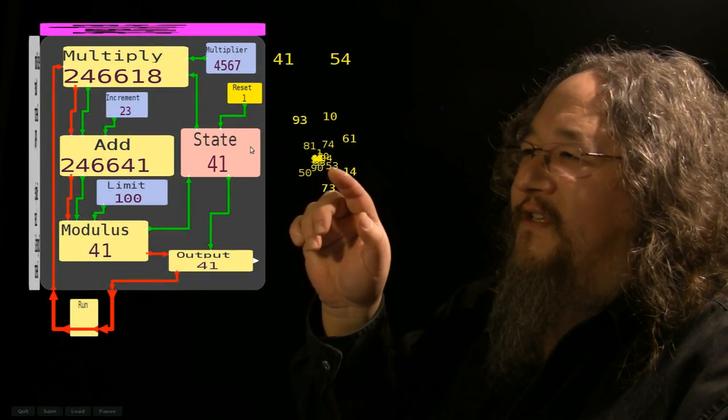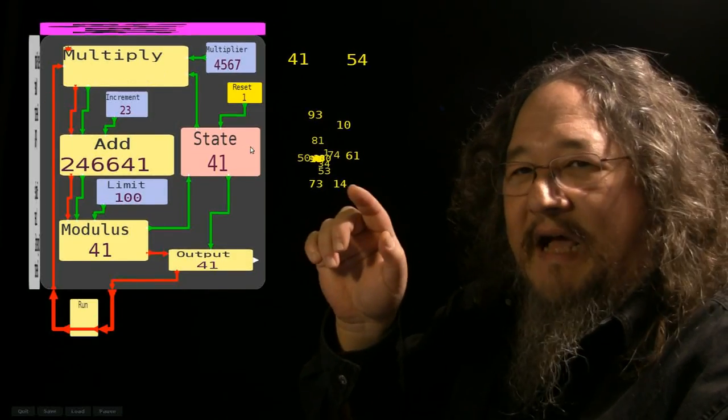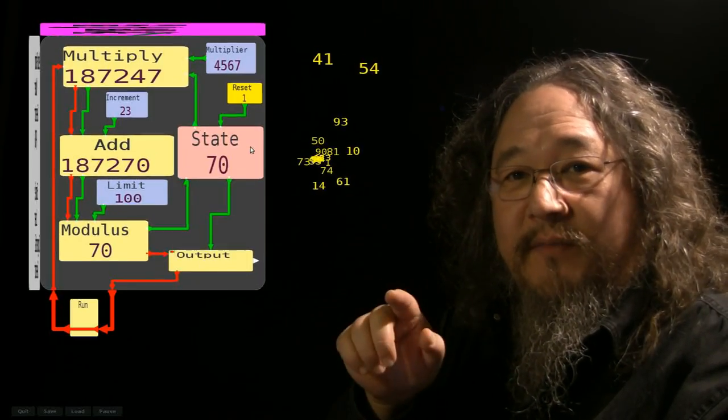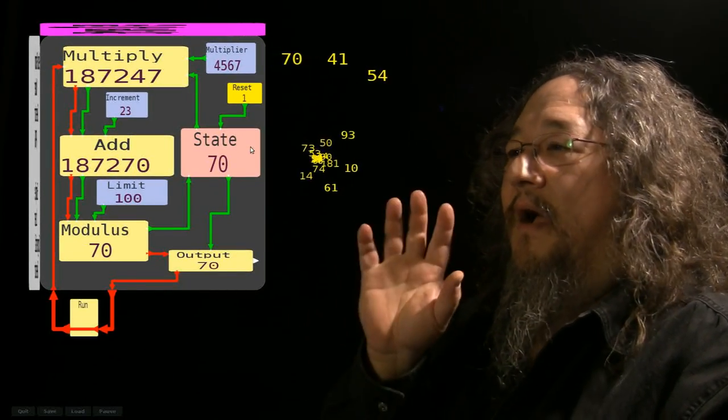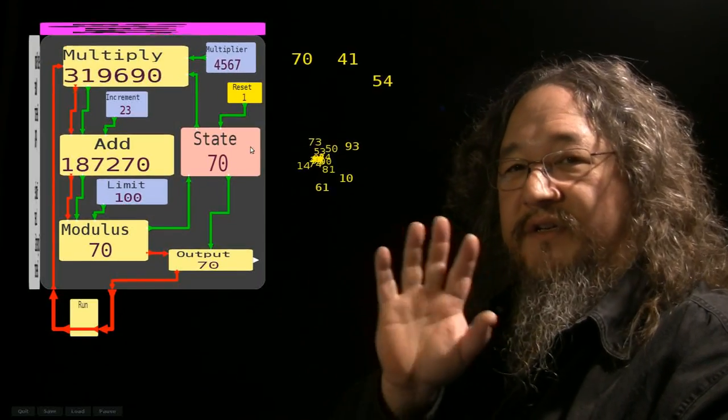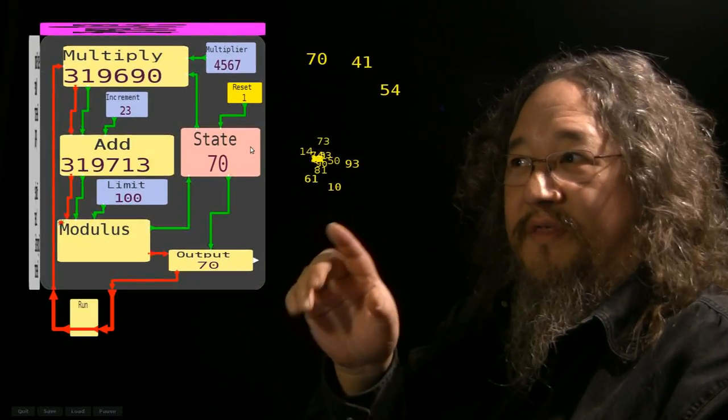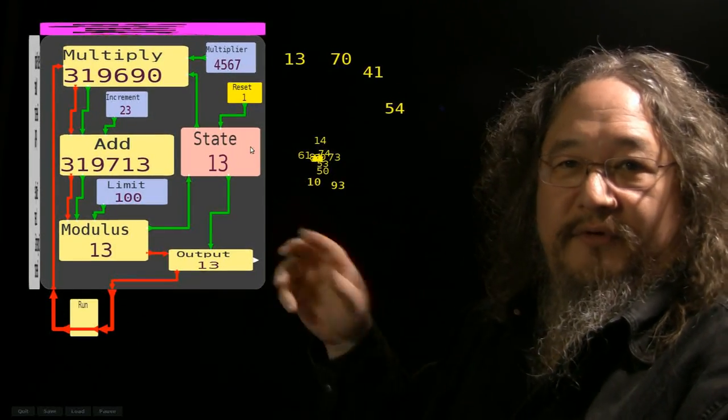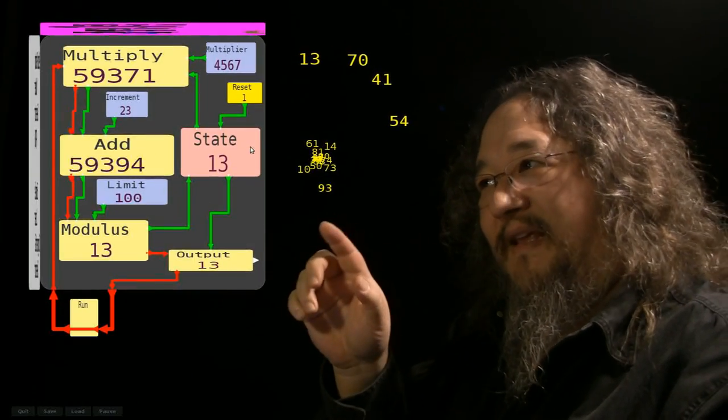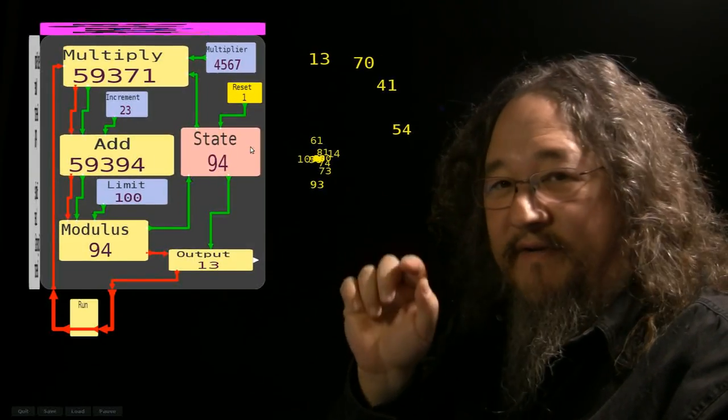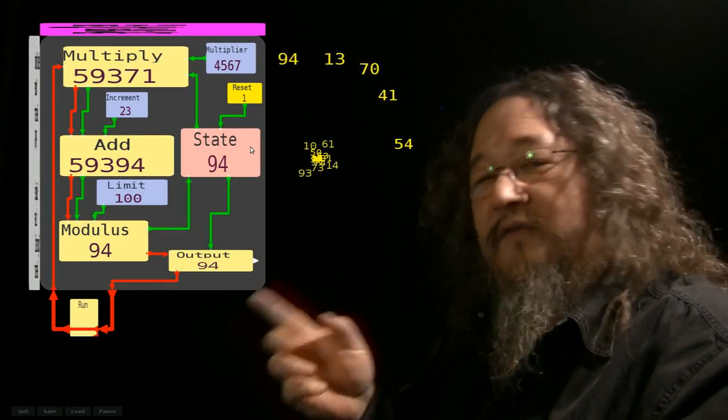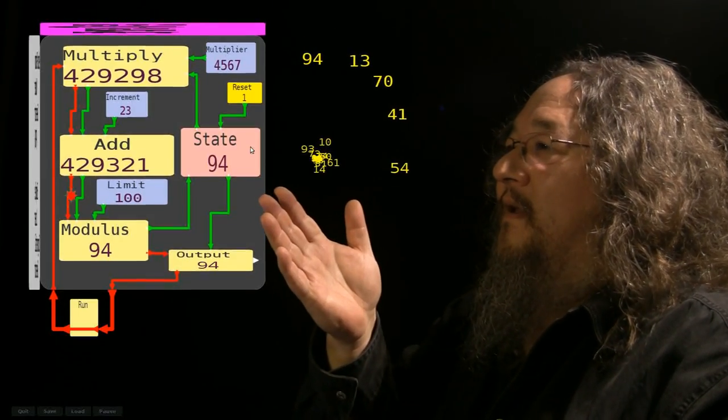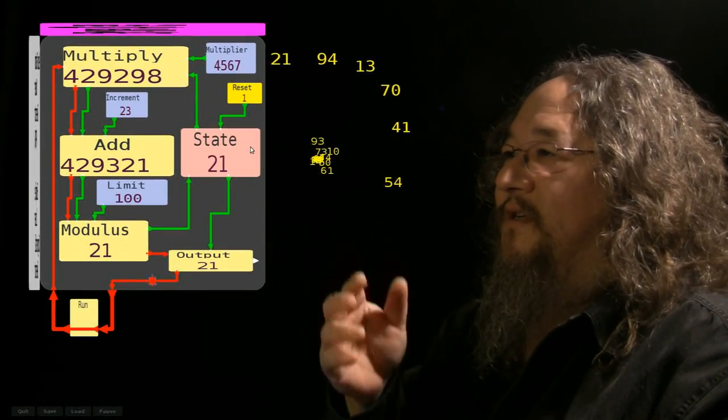So that state variable did not get reset between each cycle of producing a random number. And that's how it works. A computer is deterministic. Same inputs, same outputs. We thought this program didn't have any inputs. We thought we just sort of made it go, and then it produced an endless stream of numbers. But really, the way we need to think about it is that that state variable is an additional input that it writes and then reads back in.